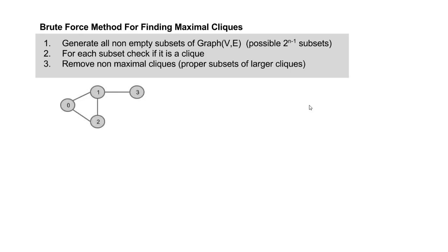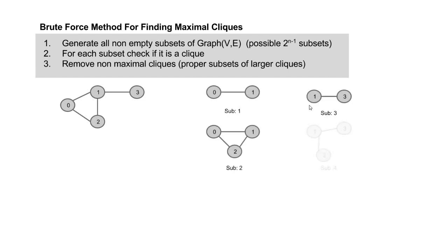For example, for this graph we first find all the subsets — Sub1, Sub2, Sub3, Sub4, and so on. For each subset, we check if it is a clique. For example, in Sub2, we check node 0 to see if it is adjacent to every other node in the subset (nodes 1 and 2), then check node 2 for adjacency to node 1, and so on. Then we remove non-maximal cliques that are proper subsets of larger cliques — if Sub1 is contained in Sub2, we can remove Sub1 from further consideration.